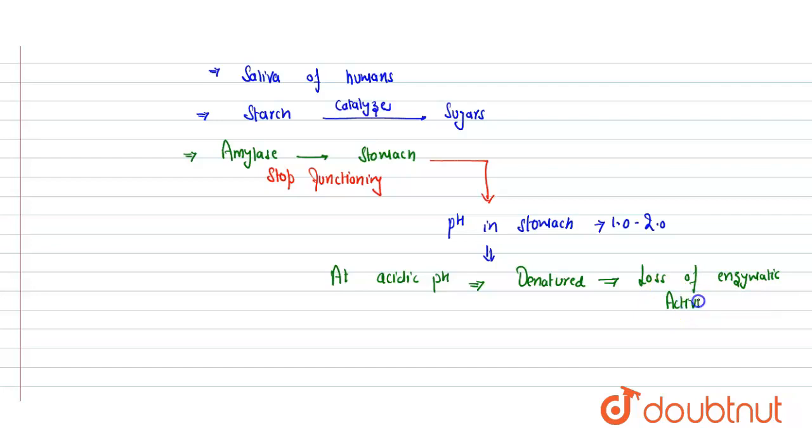As we all know, enzymes which are proteins will remain active only when they're in full structural form—when their structure is intact. But at acidic pH it gets denatured, which results in the loss of enzymatic activity. That's why it doesn't work when it enters into the stomach.